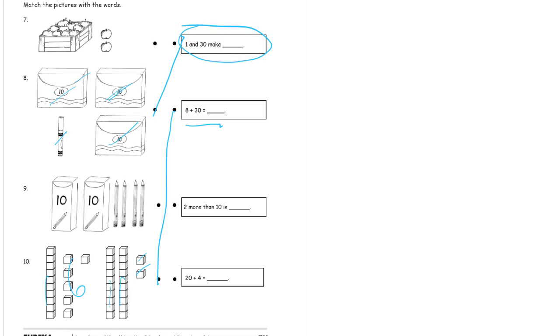And then we have two more than ten. So, we need a ten and two more. That's the apples up here, right? Because there's that bunch of ten. And then there's two more. One, two more apples. So, that one matches up here. And this last one, twenty plus four. Here's two groups of ten. That's twenty. And then one, two, three, four. Twenty plus four. That's it right there.